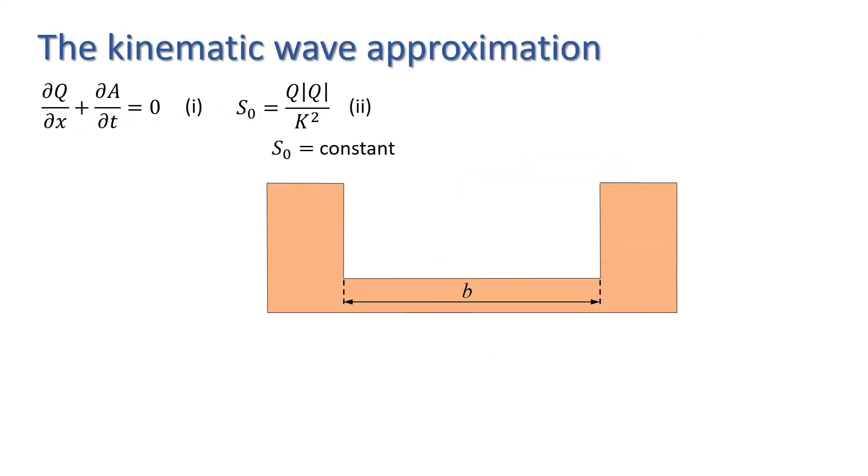We're going to set up a simple 1D finite difference solution to the kinematic wave approximation for a wide rectangular channel with a known constant bed slope. Note, I've assumed no lateral inflow in this case, i.e. there's no source term on the right-hand side of the continuity equation.